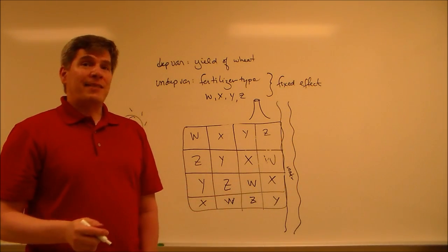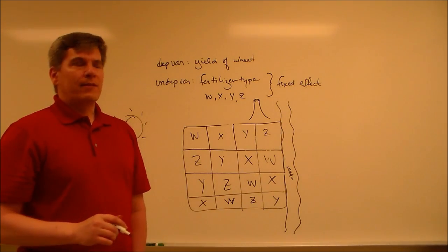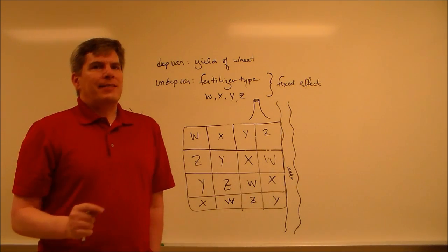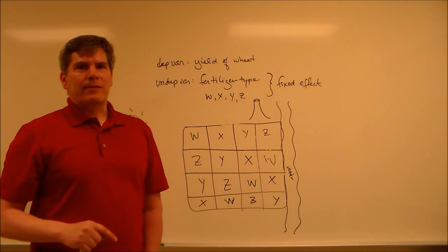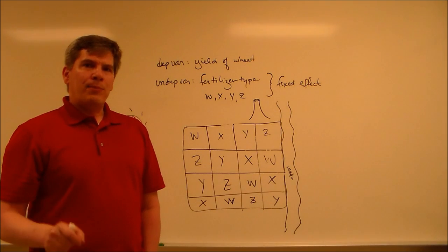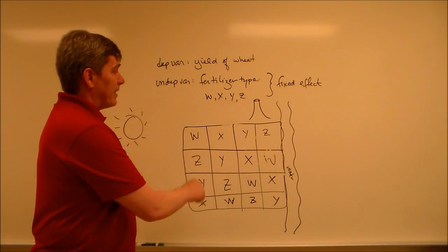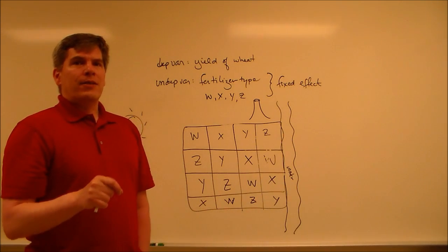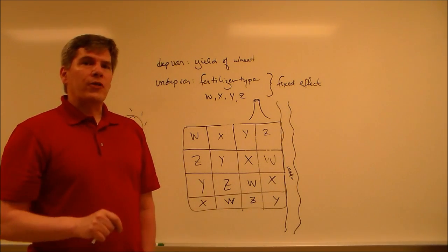The analysis of this is one-way analysis of variance. Fixed effect. So the analysis is the same as it was back on lecture one. The setup for the experimental design, however, is what makes this a Latin square design. And it's done to control for realities on the ground.